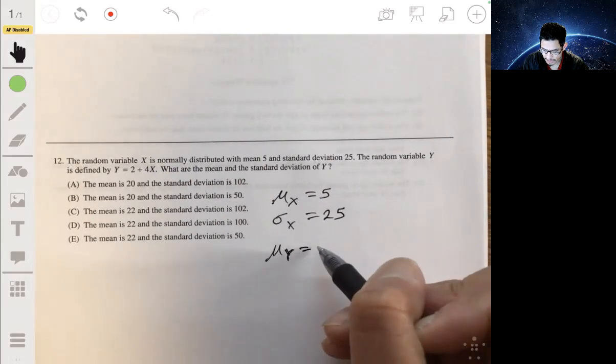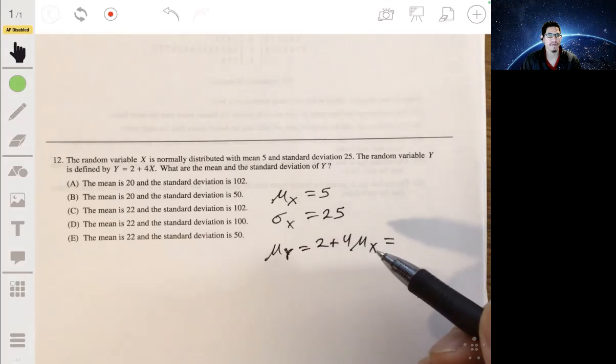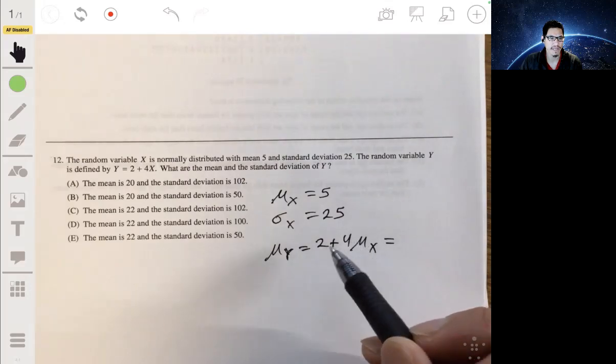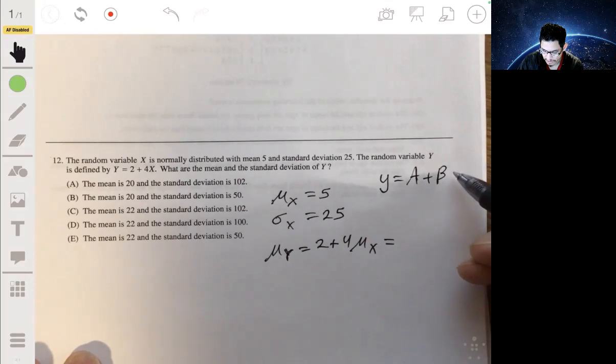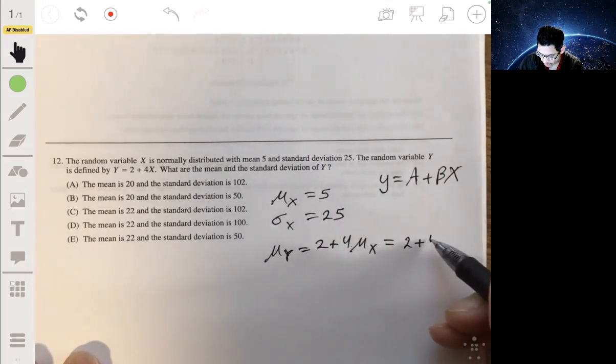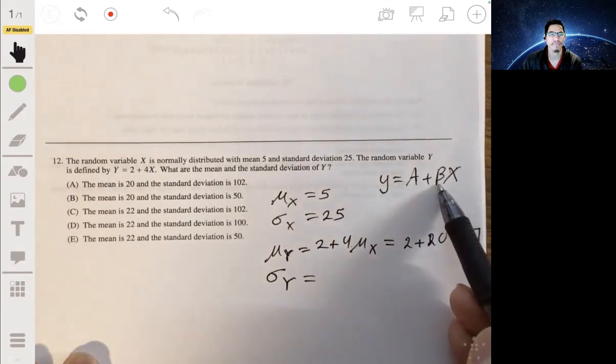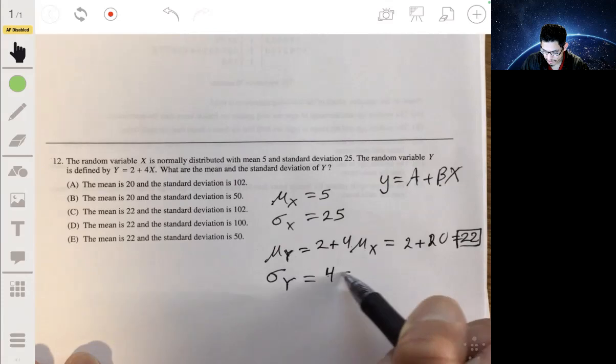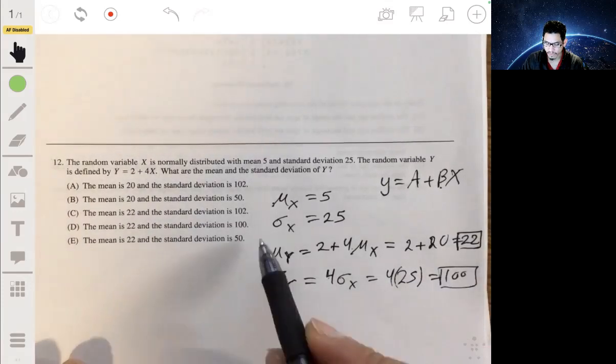So the mean of Y is going to be equal to 2 plus 4 times the mean of X. Measures of center, when you're transforming a measure of center, you have to multiply and add. So multiply by the scalar and add the constant. You have a form of something like this, Y equals A plus BX. So then we just, this would just be 2 plus 4 times 5, so 2 plus 20. So 22 would be the mean of Y. Now, when you have a standard deviation, all you have to do is multiply. Multiply by the scalar B. So standard deviation of X is 25. So the standard deviation of Y will be 4 times the standard deviation of X, or 4 times 25, which is going to be just 100. And the answer will be D.